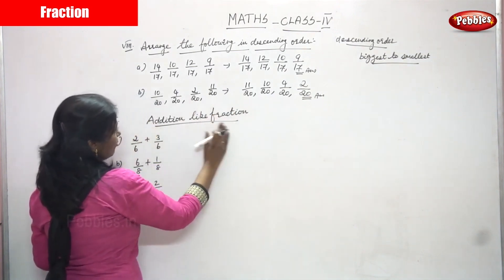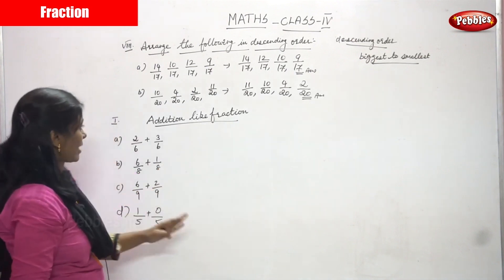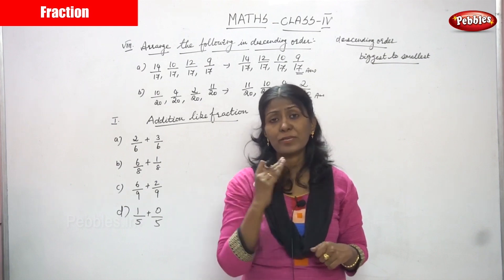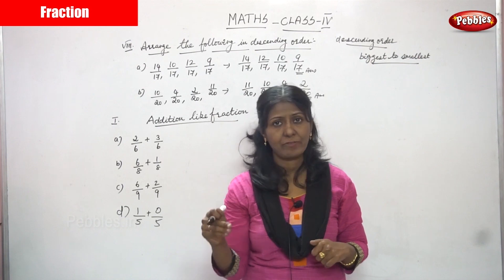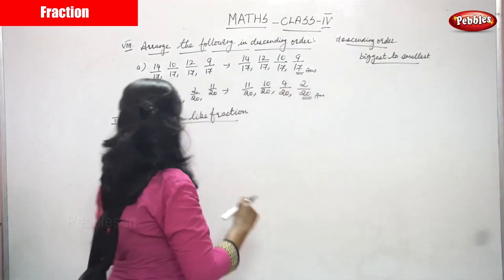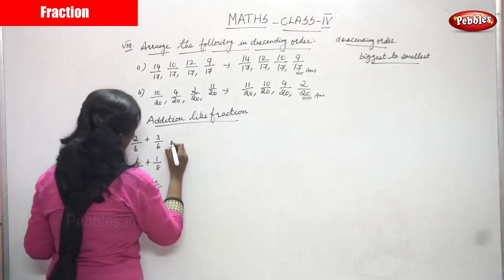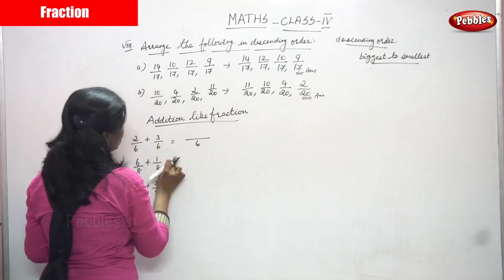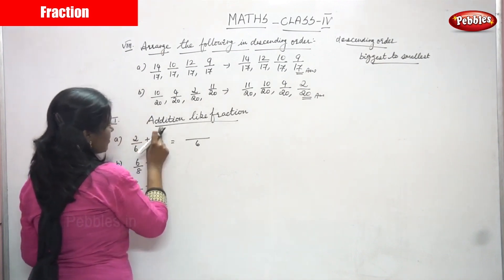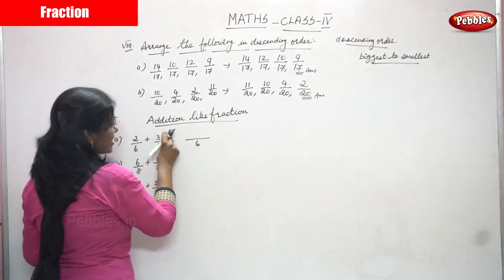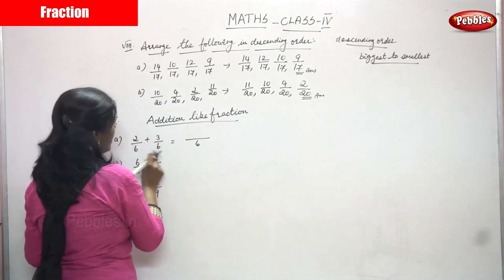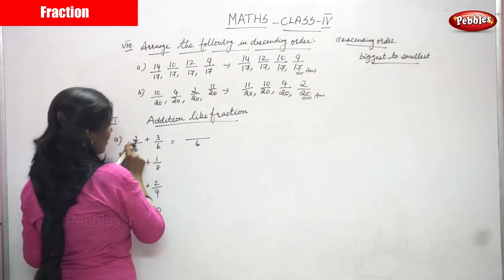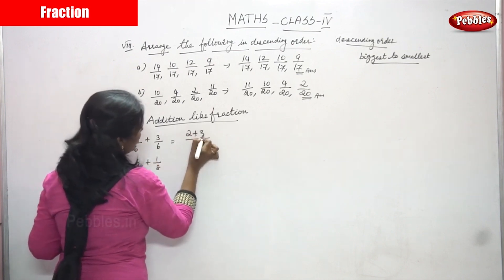Descending order is done. Now we move to a new topic: addition of like fractions. Like fractions means the denominators are always the same. If the denominators are the same, it is a like fraction. So addition of like fractions — since both fractions have the same denominator, you write the denominator one time and then add the numerators, because the sign in the middle is addition.